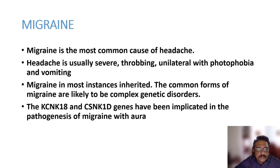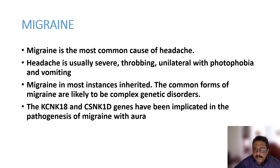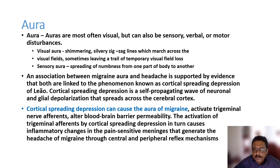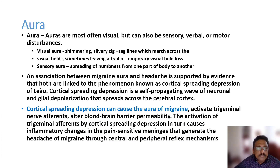Migraine often involves multiple family members with similar findings. Classical migraine is associated with aura, which is often visual but can include sensory, verbal, or motor disturbances. The aura precedes the headache; sometimes aura occurs without headache, but most of the time in classical migraine aura is present.